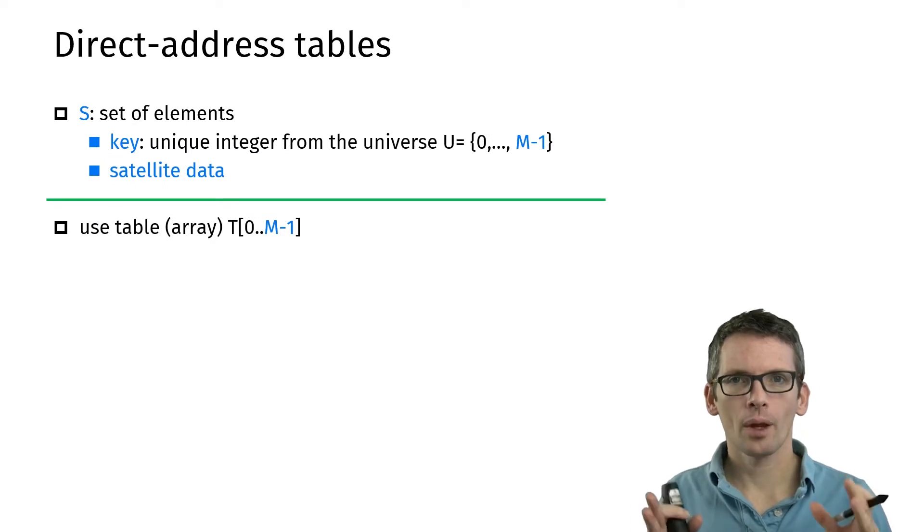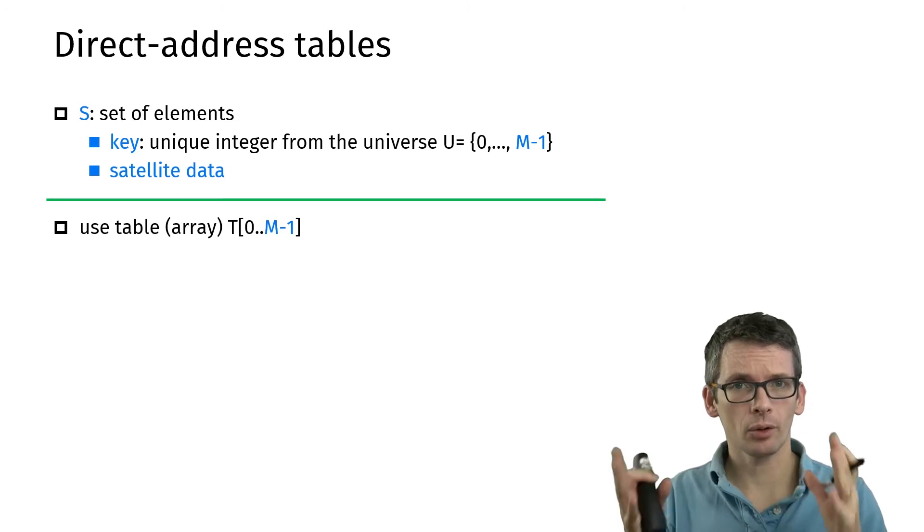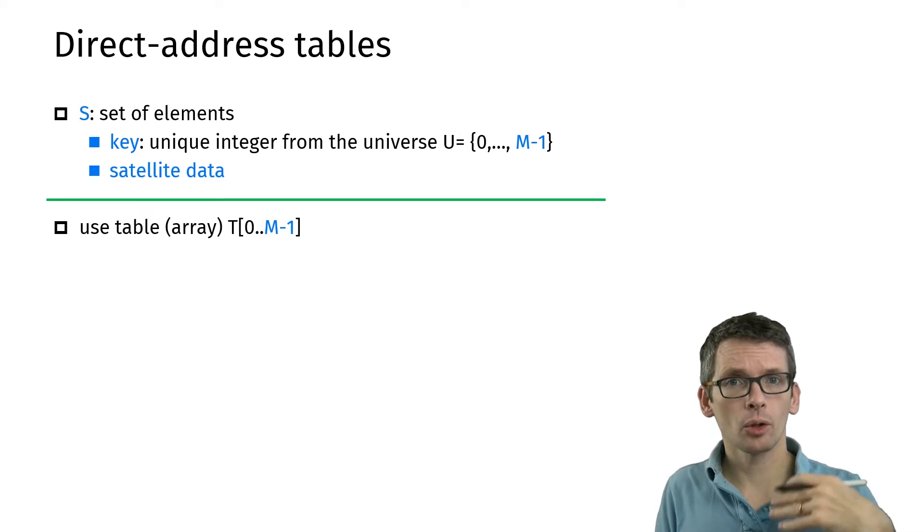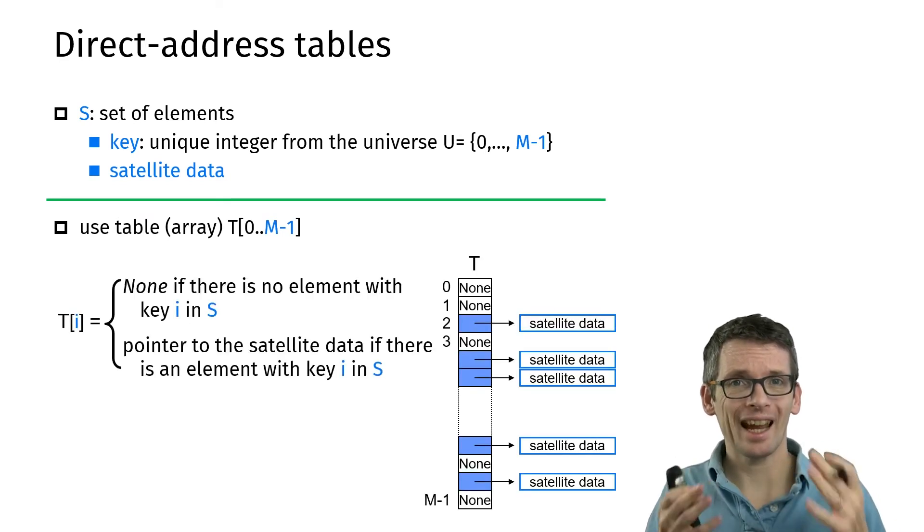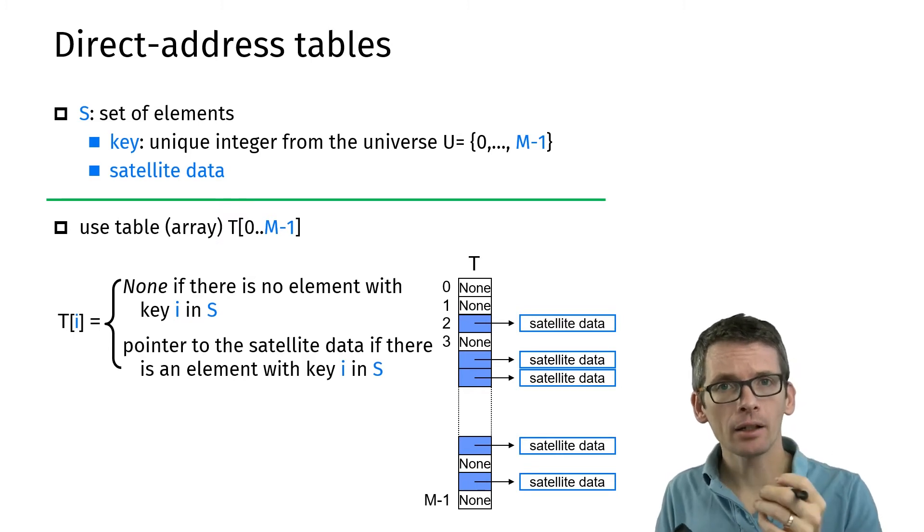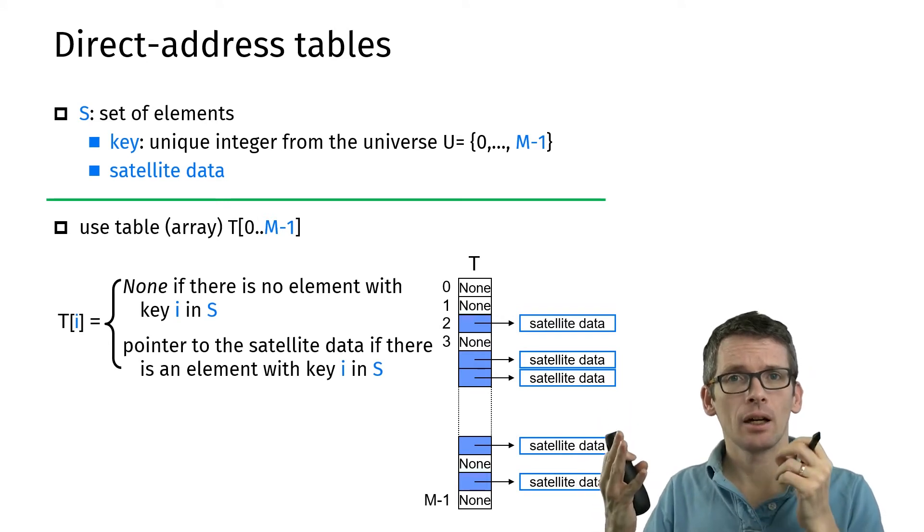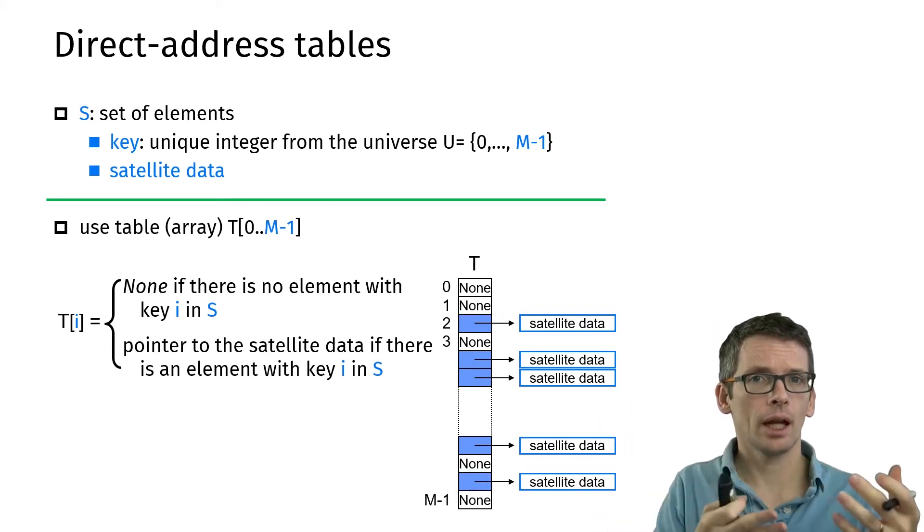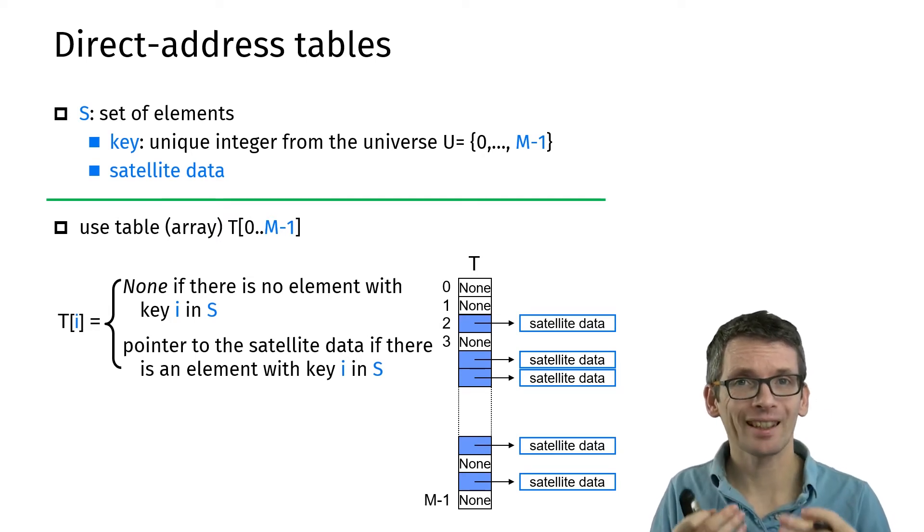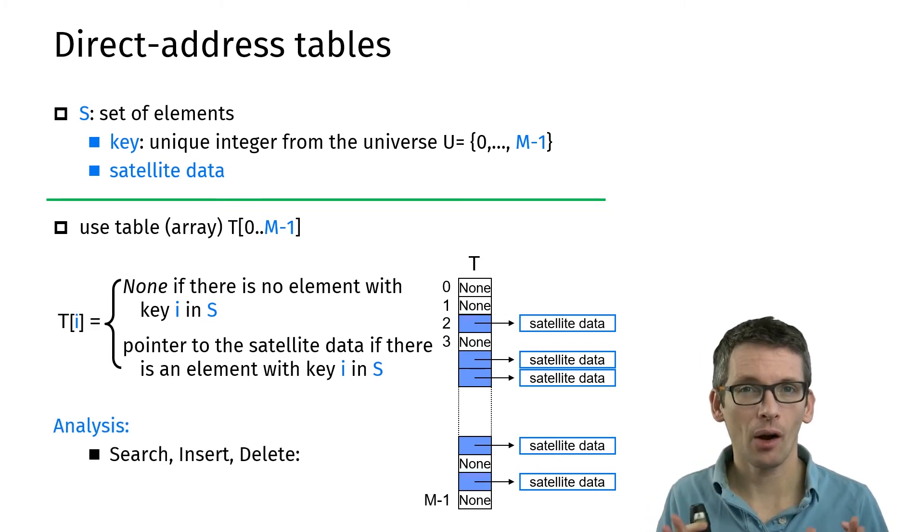So what's our general setting? We have a set of elements S, each having a unique integer key from a universe 0 to m-1 and satellite data. Now we're going to store that in a table, in an array of size m, so size of the universe. At index i, I'm going to store the element with key i and its satellite data. If i is not the key of an element, then I'm going to store none.